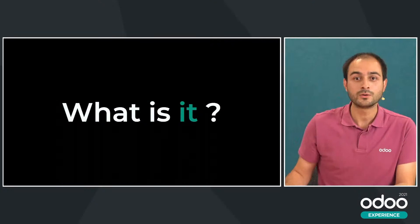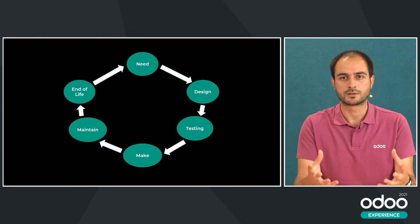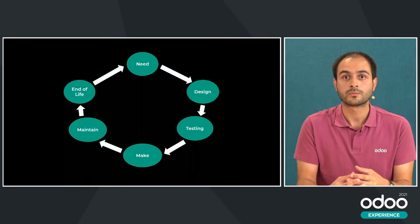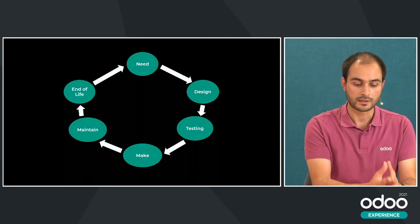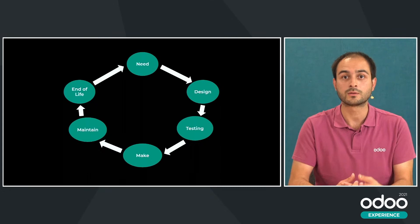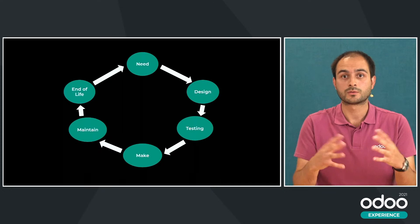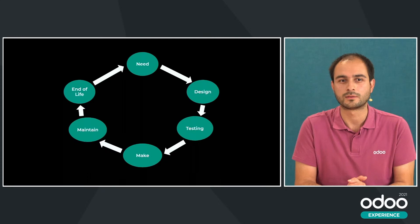Not really. So before we start, let me go back on the concept a little bit to make sure we are all on the same page. When we talk about PLM, we look at a graph with various stages. Typically, when you want to create a new product, you follow these stages: first, identification of a need, then you design your solution, then you go through testing — testing again, perhaps — until you are happy with the result, and you can manufacture and commercialize that product.